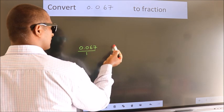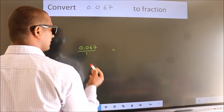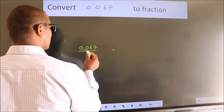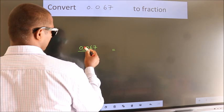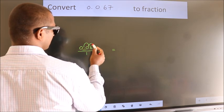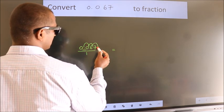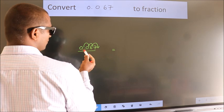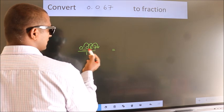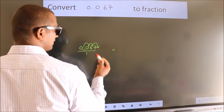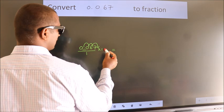To convert this to a fraction, we have to move this decimal after 1, 2, 3 numbers. To move this decimal after 3 numbers, we should multiply it with 1000.